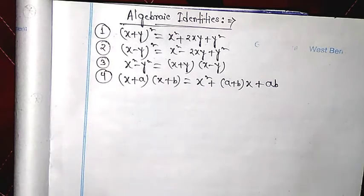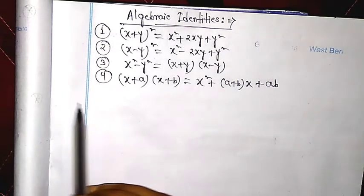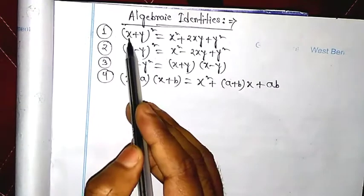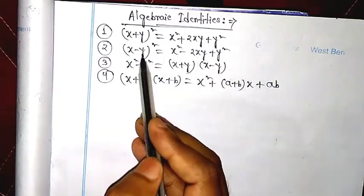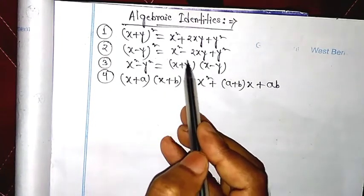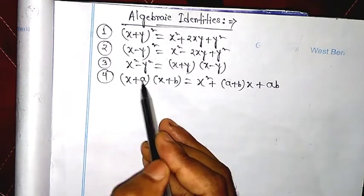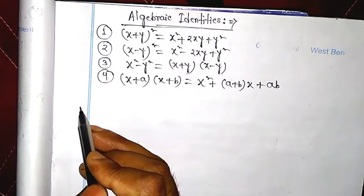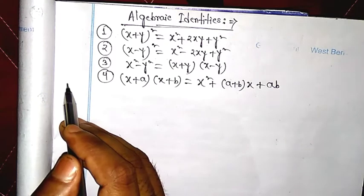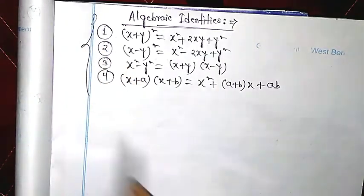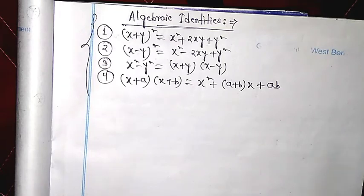Now I discuss some algebraic identities — these are standard results used to solve exercise problems. The four identities are: (x + y)² = x² + 2xy + y²; (x − y)² = x² − 2xy + y²; x² − y² = (x + y)(x − y); and (x + a)(x + b) = x² + (a + b)x + ab.